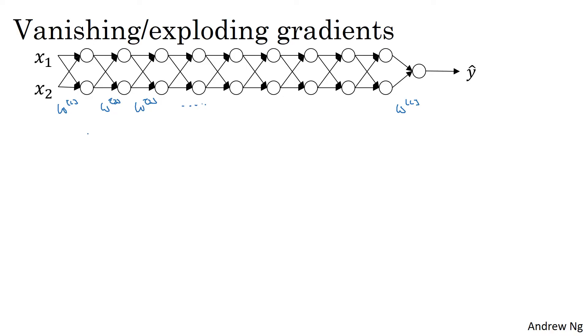For the sake of simplicity, let's say we're using an activation function g(z) = z, so a linear activation function, and let's ignore b. Let's say b[l] = 0.